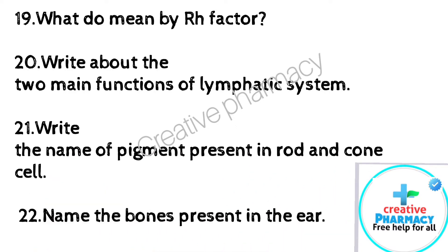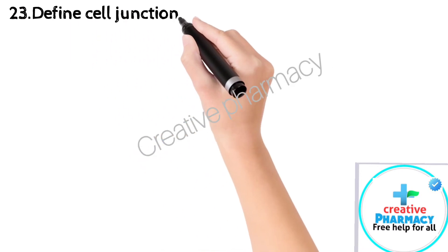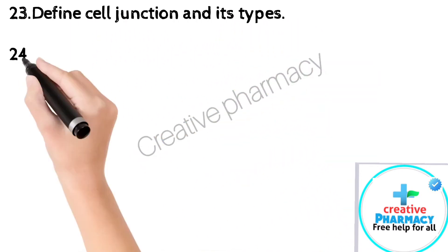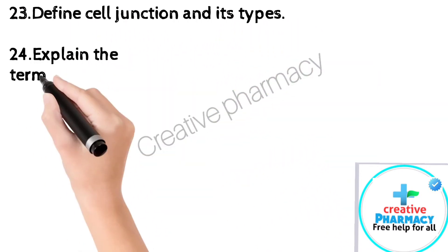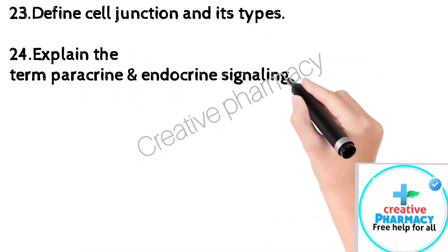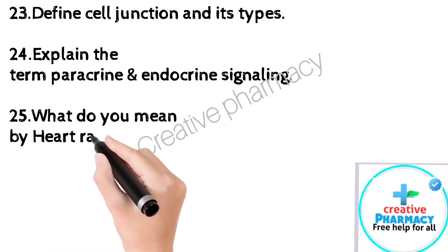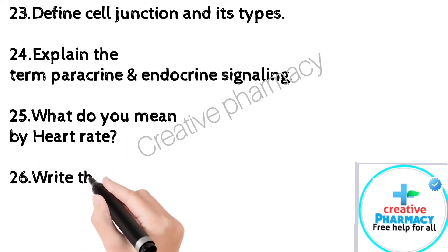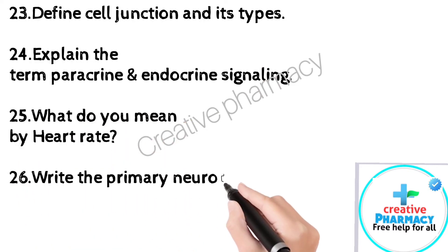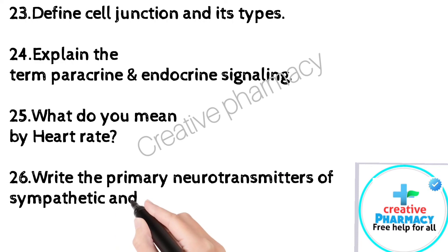22. Define cell junction and its types. 23. Explain the terms paracrine and endocrine signaling. 24. What do you mean by heart rate? 25. Write the primary neurotransmitters of the sympathetic and parasympathetic nervous system.